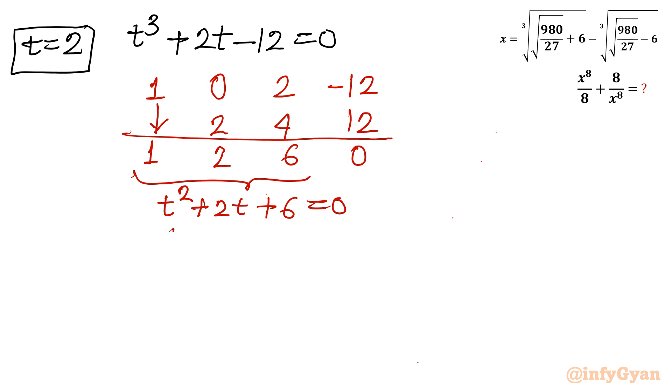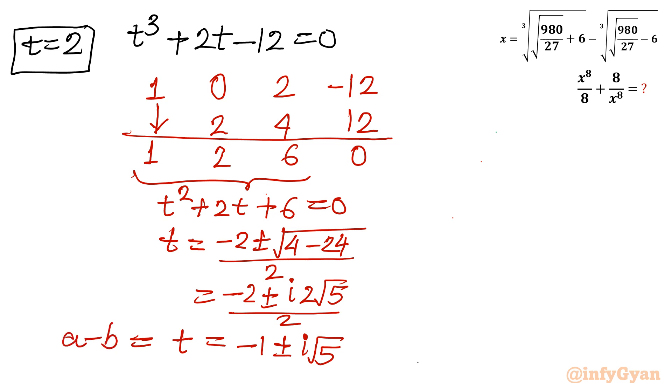Now let us put it equal to 0. Figure out whether solutions of this quadratic equation are real or not. So t equals minus b plus minus under the root, b square is 4 minus 4ac is minus 24. You can see the number inside the square root is negative. So I can write it is minus 2 plus minus i times 2 root 5, square root of 20 is 2 root 5, over 2, which equals minus 1 plus minus i root 5. And this solution t is a minus b, and a minus b is x. In the beginning of this video it was given x is real, so we will reject this.